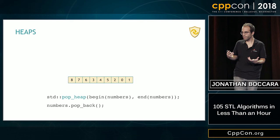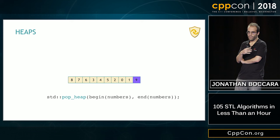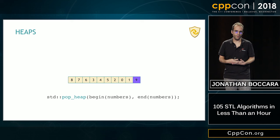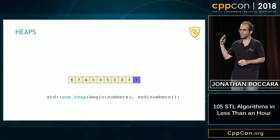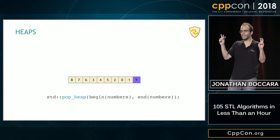If we want to actually remove that value, we pop it back from the vector. But if we don't remove it and repeatedly call pop_heap on the shrinking heap, at the end we get a sorted collection. That's a way to sort a collection, and that's what sort_heap does.